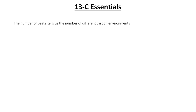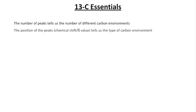Some essentials: the number of peaks tells us the number of different carbon environments we've got in the molecule, and the position of peaks — the chemical shift or delta value — tells us the type of carbon environment, which we get from the data sheet.